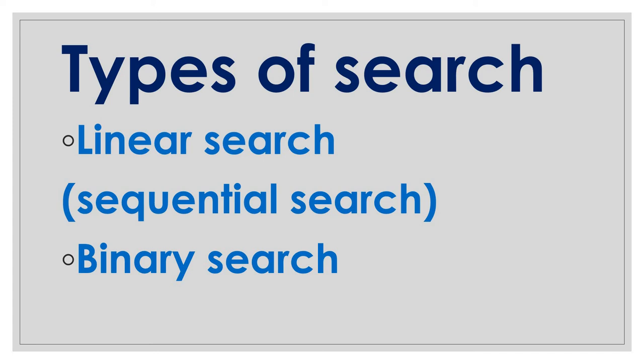A search algorithm accepts an argument A and tries to find the corresponding data where a match of A occurs in a file or a table. If the names were organized in some order, searching would have been faster. Here we look at linear search.